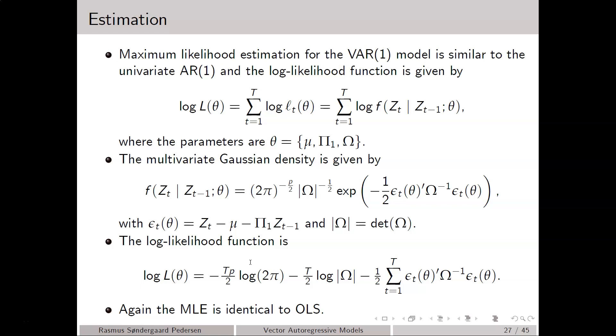Maximum likelihood estimation of vector autoregressive models is very similar to estimation of univariate autoregressive models. So for instance, if we have a vector autoregressive model of order one, then we can write down the likelihood function.